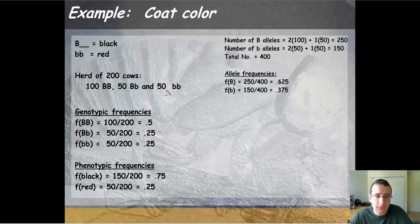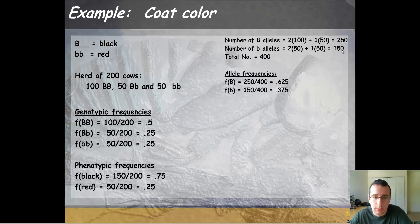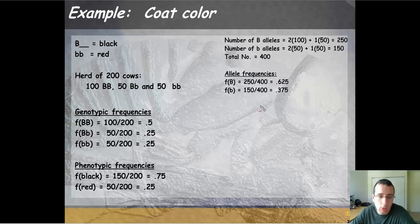You repeat the same process for the recessive allele — count the homozygous recessive twice, plus once the heterozygous number. That gives you a total of 150 recessive alleles out of 400, so that's 0.375 or 37.5% of the population made up of the recessive allele.